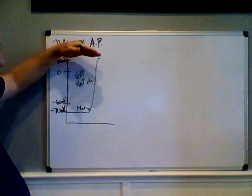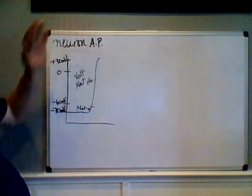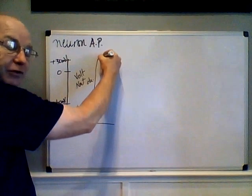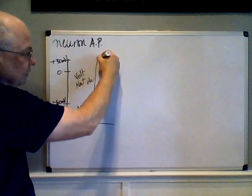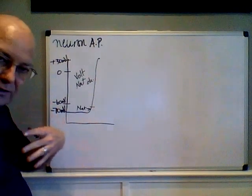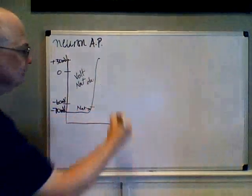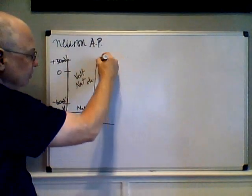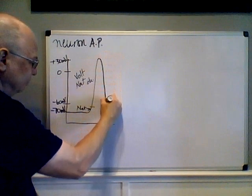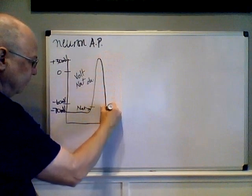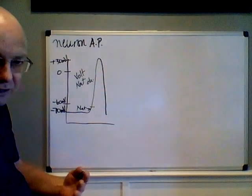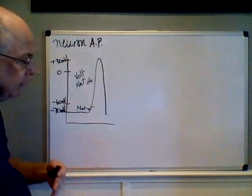Once we hit plus 30 millivolts, all the voltage-gated sodium channels have closed, and the voltage-gated potassium channels begin opening. Because of the concentration gradients, potassium exits the cell, losing positive charge, and we start to rush back toward zero and then minus 70 millivolts.